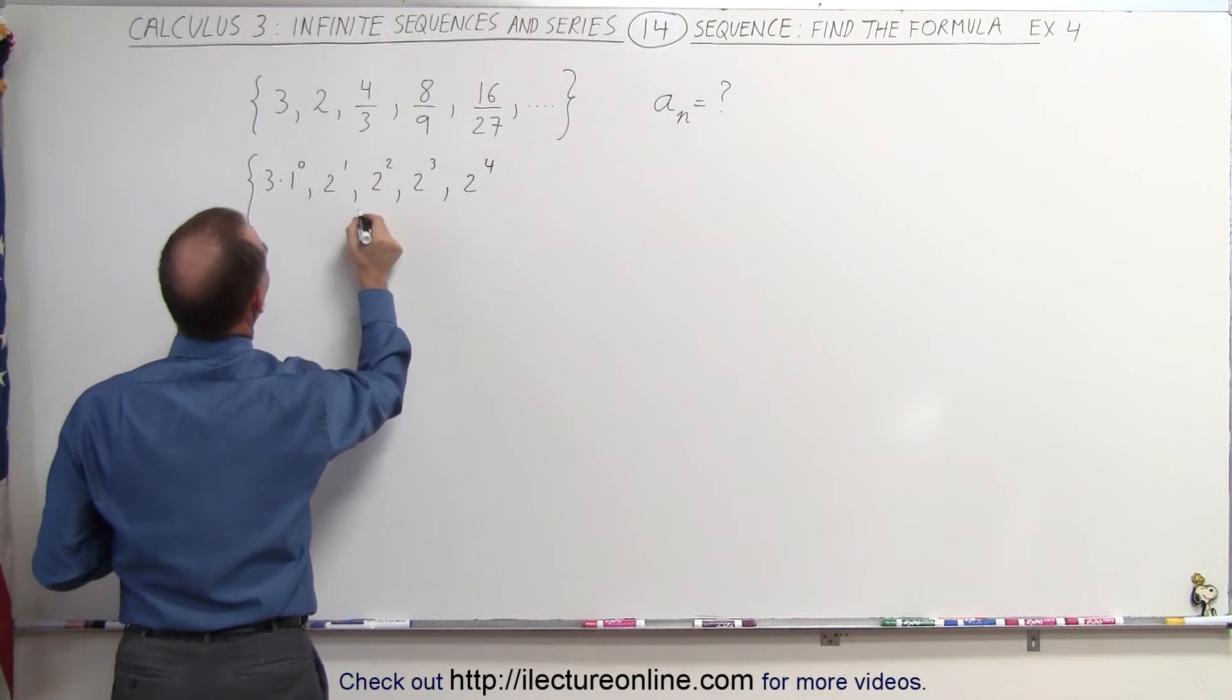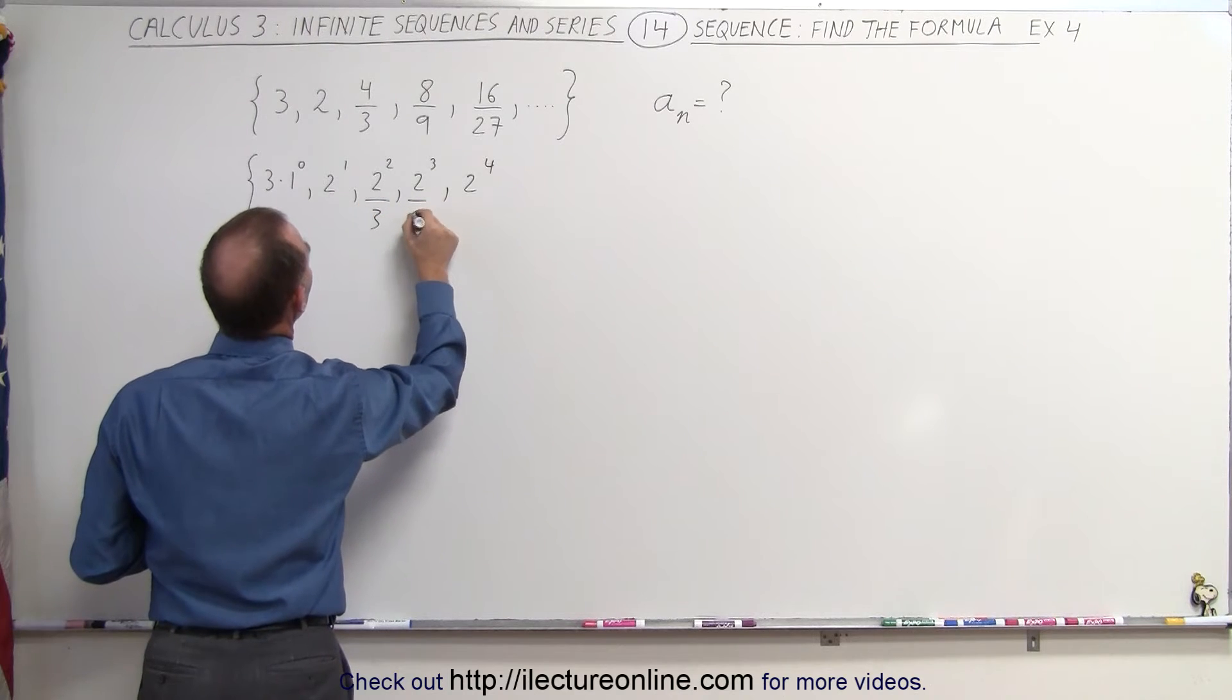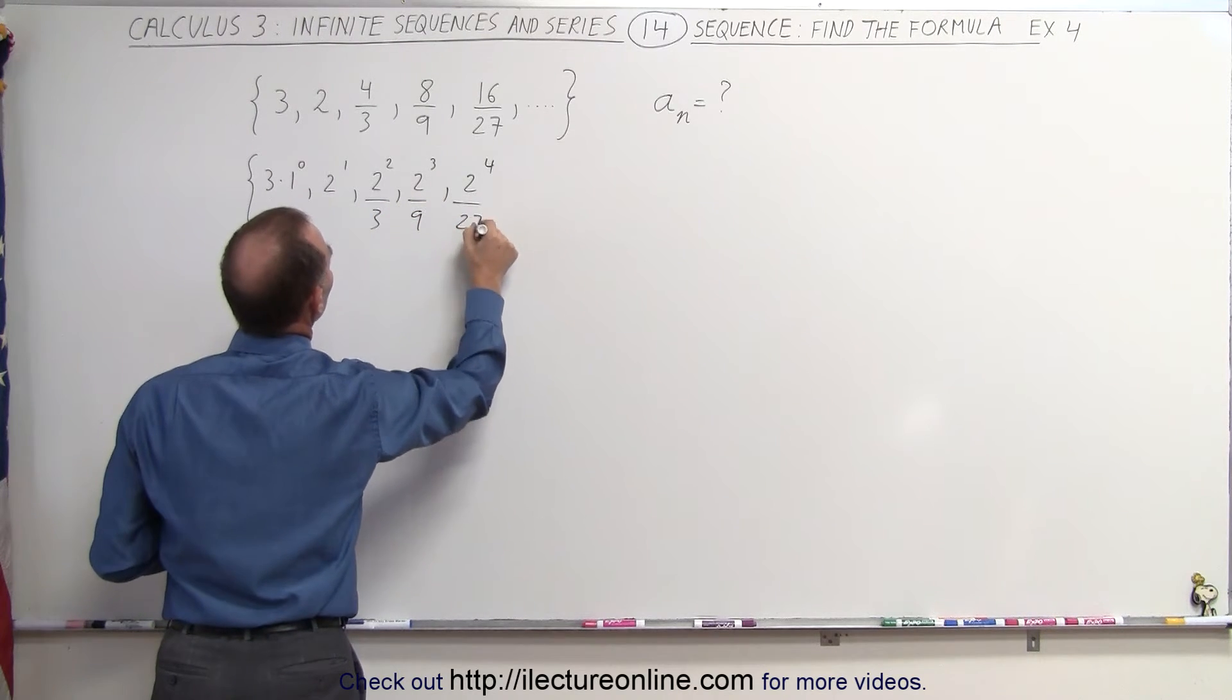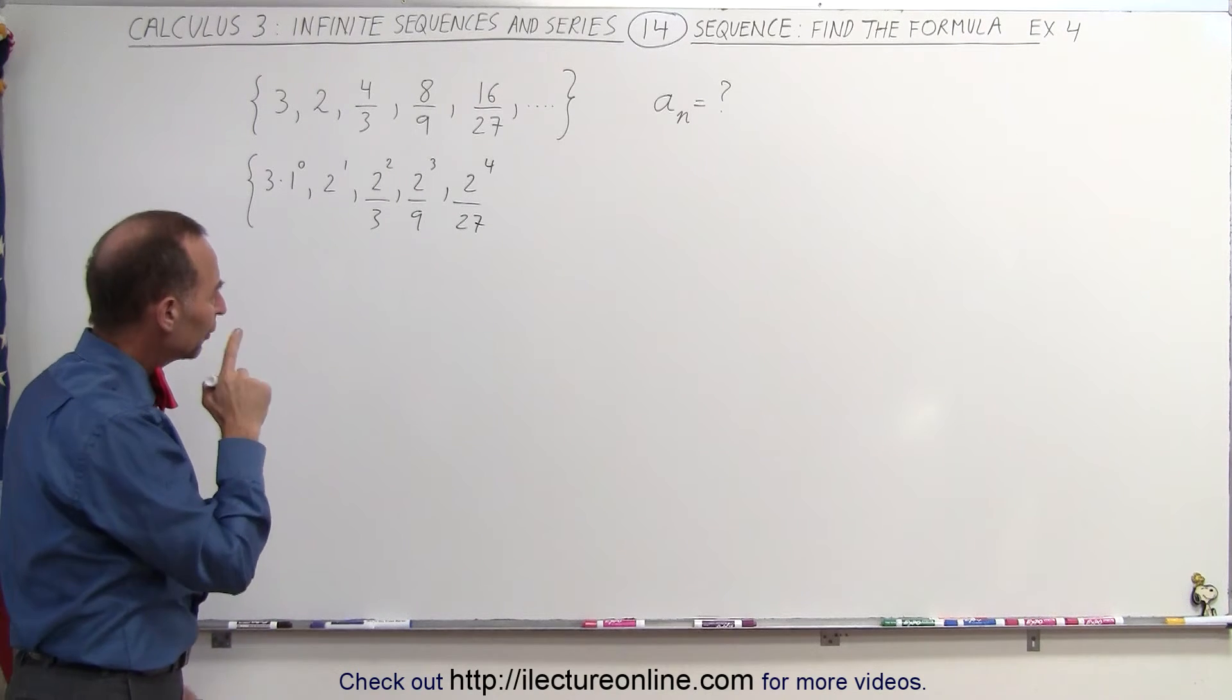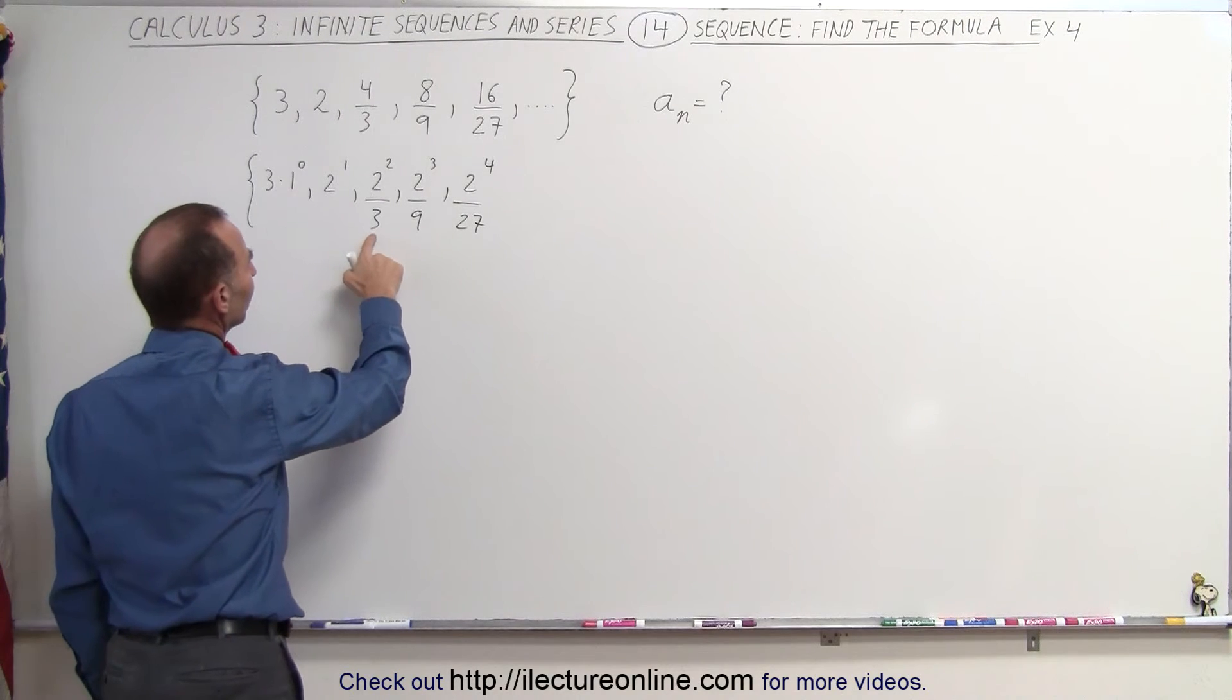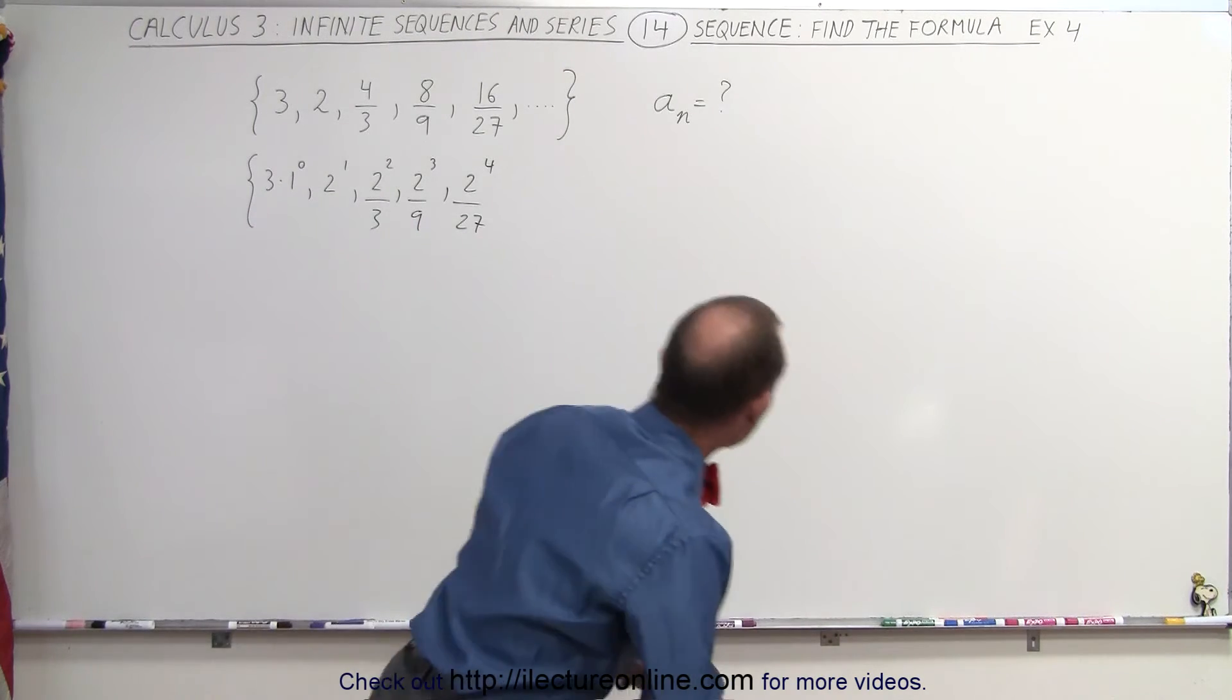Of course, the denominator I still have over here. This would be divided by 3, divided by 9, and divided by 27. I could write this in terms of 3 to the first, 3 to the second, 3 to the third. So let me do that instead. That may be even better.